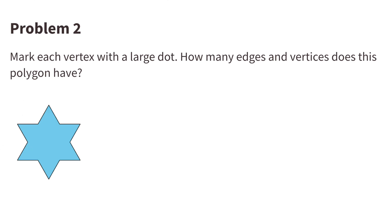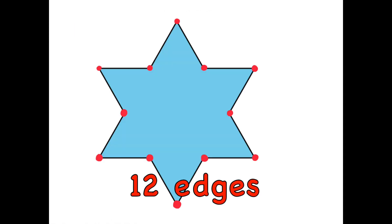Number 2. Mark each vertex with a large dot. How many edges and vertices does this polygon have? This polygon has 12 edges and 12 vertices.